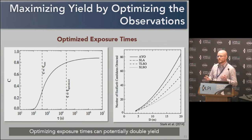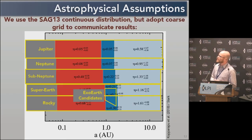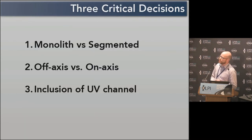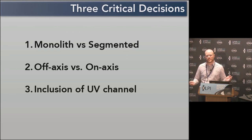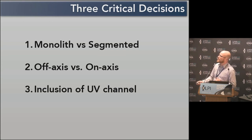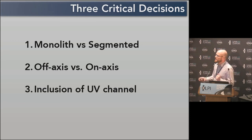We've adopted a universe of planets — a simplistic three-by-five grid of hot, warm, and cold planets of different sizes. A subset we're calling ExoEarth candidates, from 0.95 to 1.7 AU for a solar twin. We calculated yield for three critical design decisions: whether to have a monolith or segmented telescope, off-axis versus on-axis secondary mirrors, and inclusion of a UV channel. It's been largely believed you can design a better coronagraph with a monolithic mirror, but you can only get so big. Demanding UV access turns out to reduce the throughput of the entire system quite dramatically.